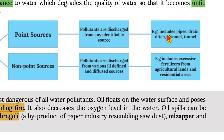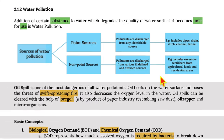Examples of point sources include pipes, drains, ditches, canals, tunnels, etc. For non-point sources, examples include excessive fertilization runoff from agricultural land and residential areas.